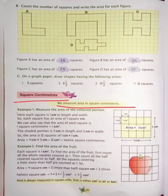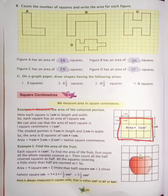Let's see example 4. Measure the area of the coloured portion. Here each square is 1 centimetre in length and width, so each square has an area of 1 square centimetre.